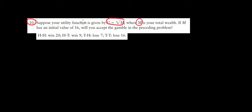Let's have a look at question 10 in this video. Suppose our utility is u equals the square root of m, where m is our wealth. Now if we have an initial wealth of 16, are we going to gamble or not?